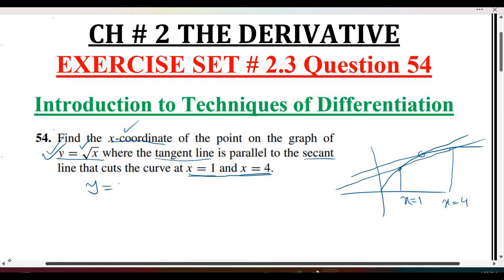We put x equals 1 into the function. When x is 1, y is 1, so the point is (1, 1). The second point on the secant line is when x equals 4, and we substitute that into the function to get the second point.